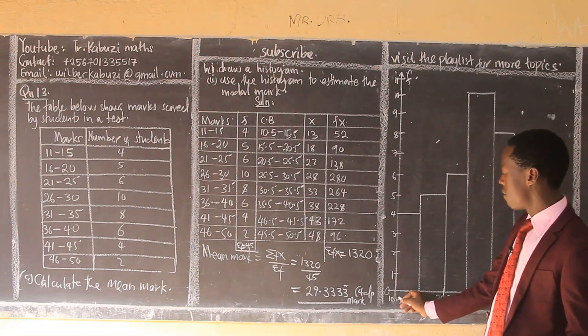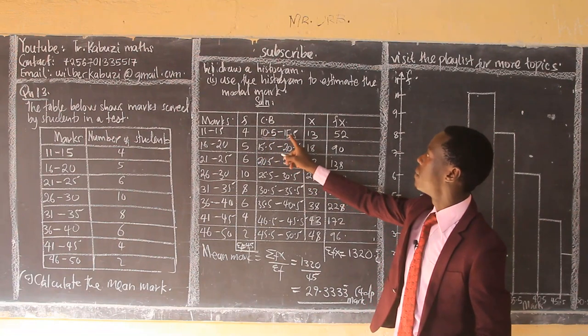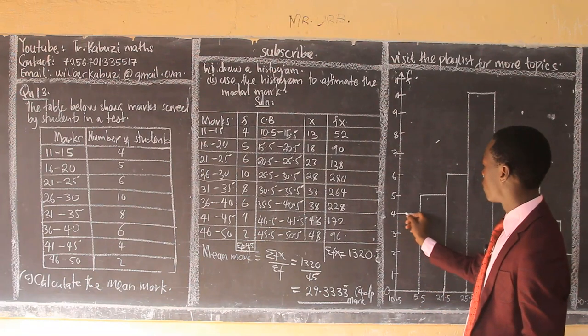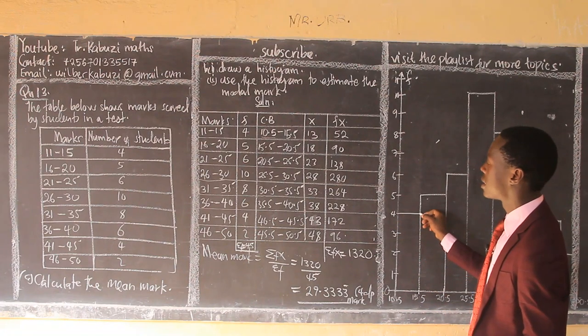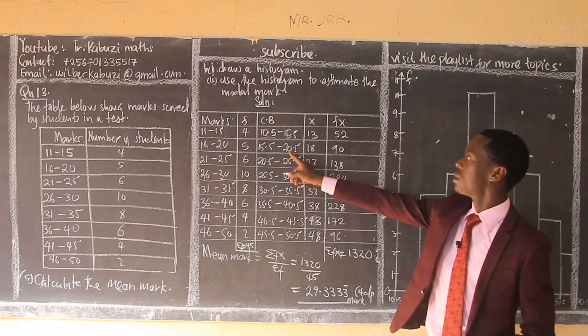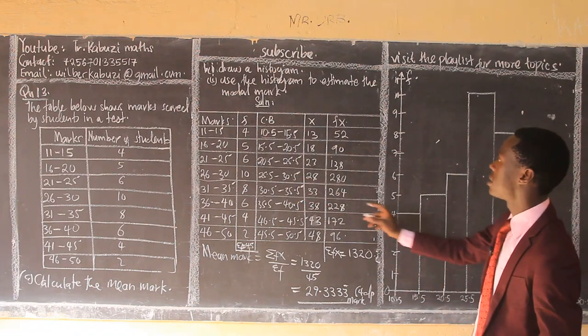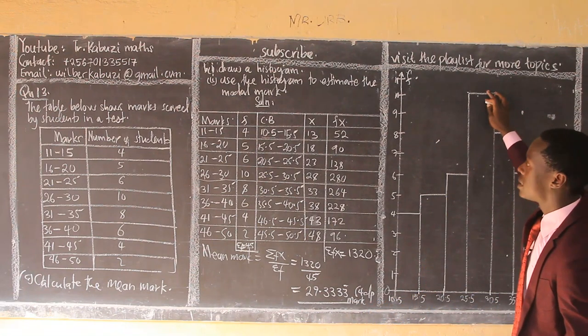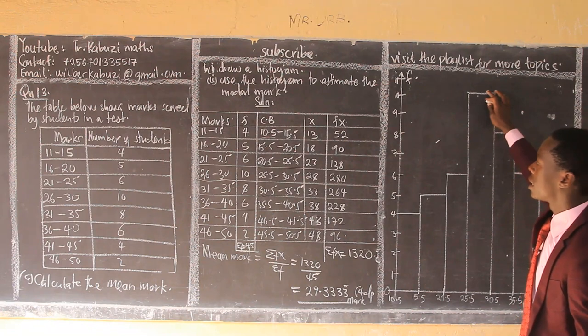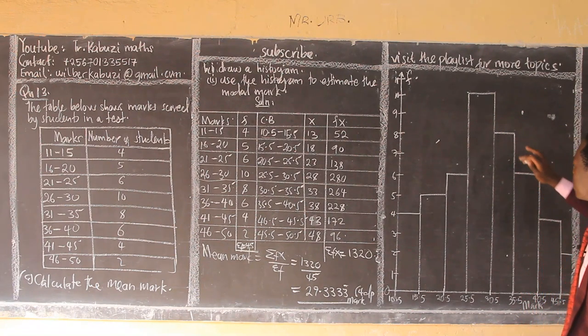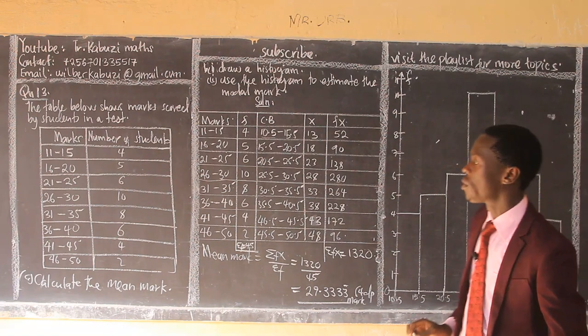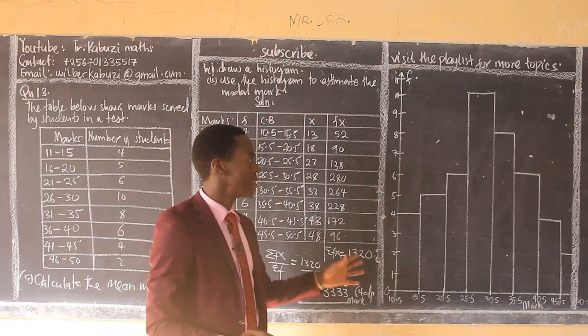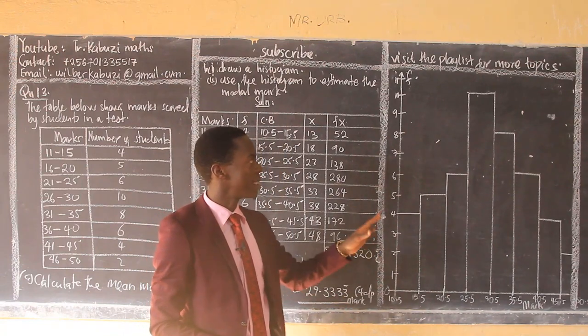Then the first class from 10.5 to 15.5, they have a frequency of 4. The next class which is 15.5 to 20.5 is having a frequency of 5. The next class is having 6. So it's having 10. Next it's having 8. Next it's having 6, 4 and 2. So that's how we draw our histogram with ease. Now, don't shade please. That's not necessary. You just leave it like that.